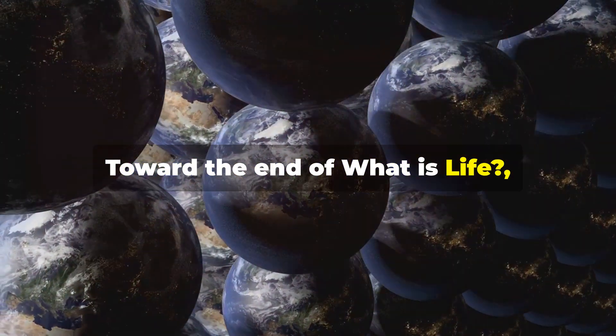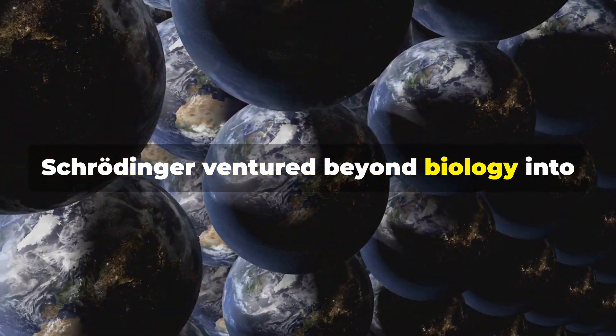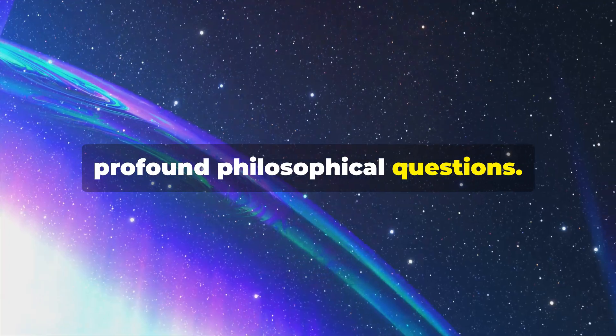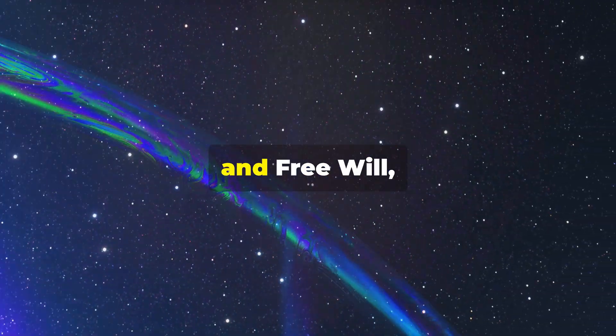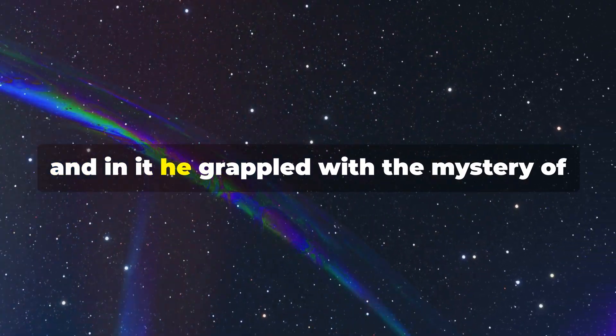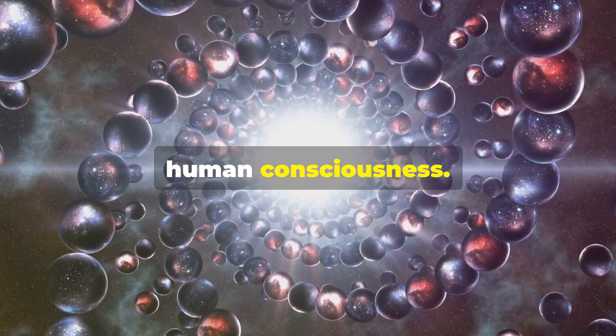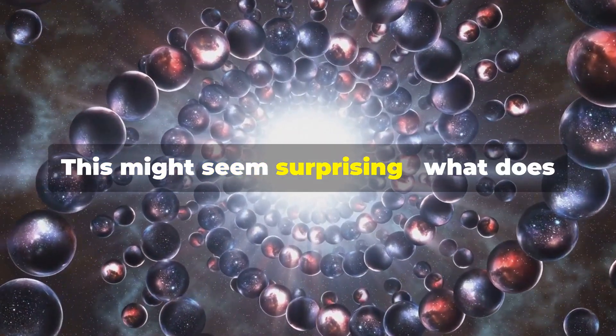Toward the end of What is Life, Schrödinger ventured beyond biology into profound philosophical questions. He titled his final chapter Determinism and Free Will, and in it he grappled with the mystery of human consciousness. This might seem surprising.